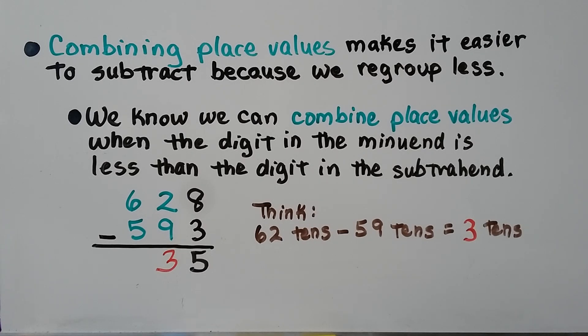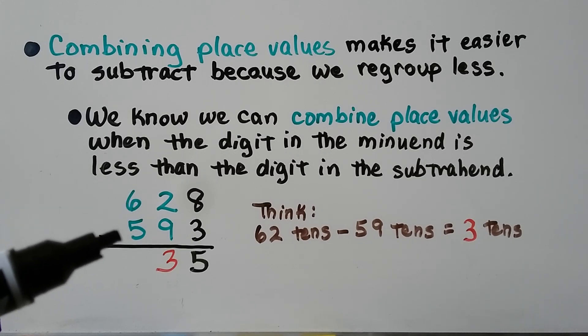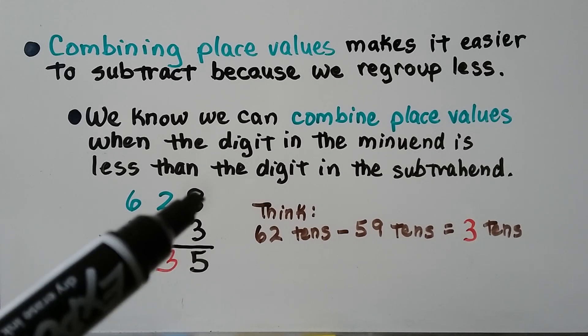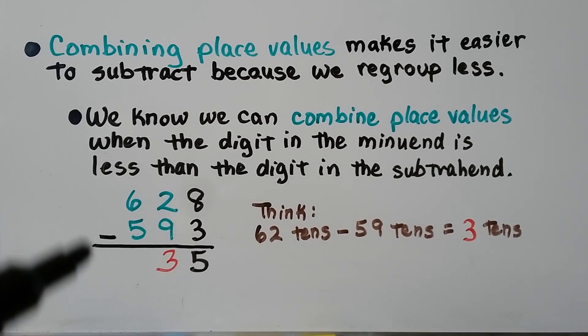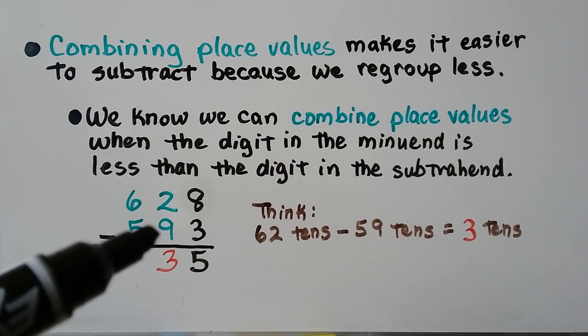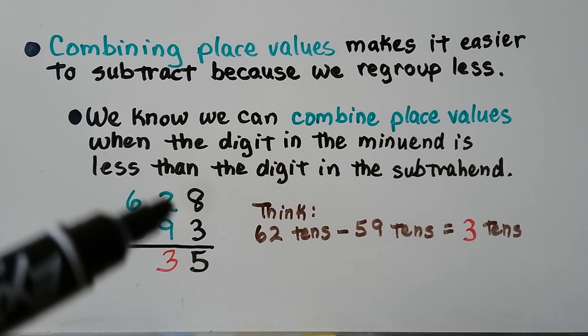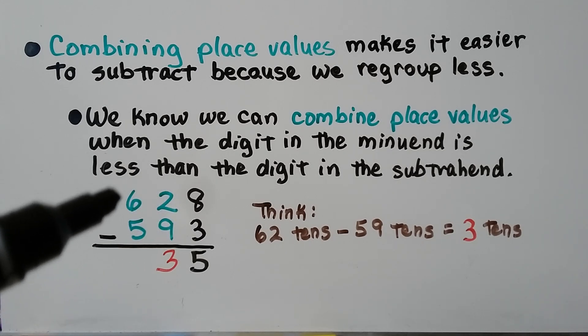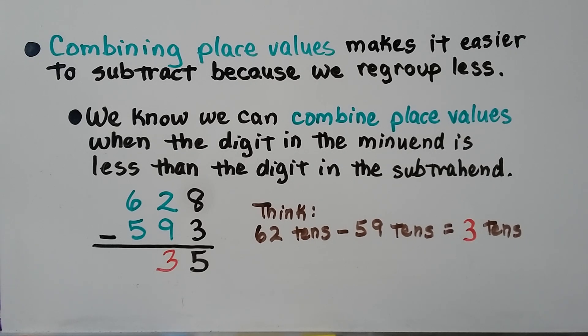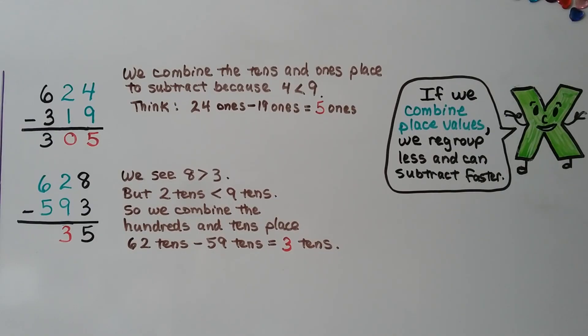Combining place values makes it easier to subtract because we regroup less. We know we can combine place values when the digit in the minuend is less than the digit in the subtrahend. Here, we can do 8 minus 3, which is 5. But the 2 is less than the 9, so we know we can combine the place values and think 62 tens minus 59 tens. The difference would be 3 tens. And we wouldn't have any hundreds, would we? So the difference is 35.